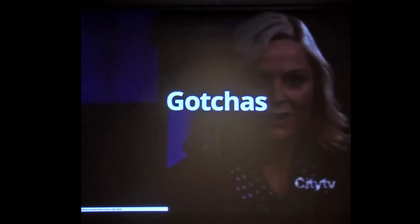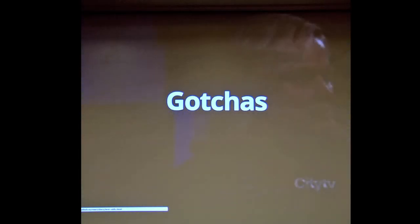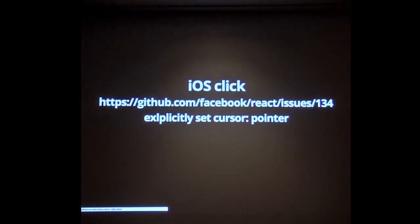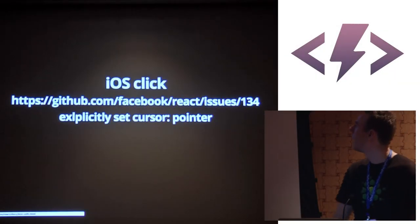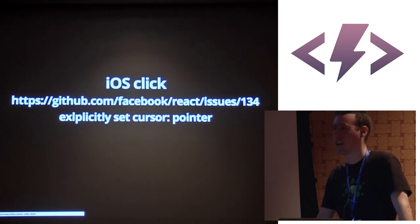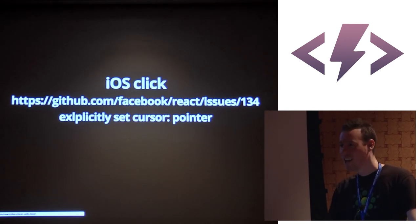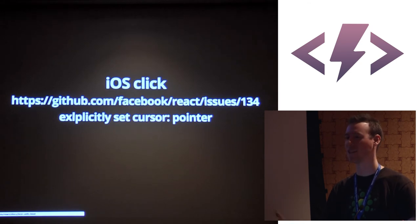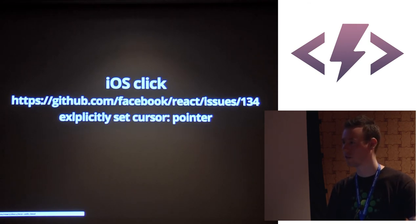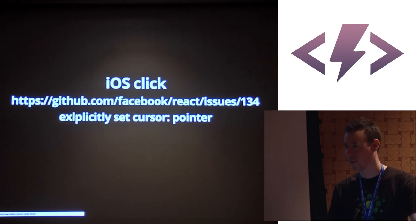A couple of gotchas to look out for. On iOS there is a bug with onClick — if you don't explicitly set the style of something to cursor pointer, the click won't register on iOS. I spent some time tracking this down. I built something, sent it to a client, and he said he couldn't click on anything on iPhone 6. As soon as I added the cursor pointer style, it all worked.